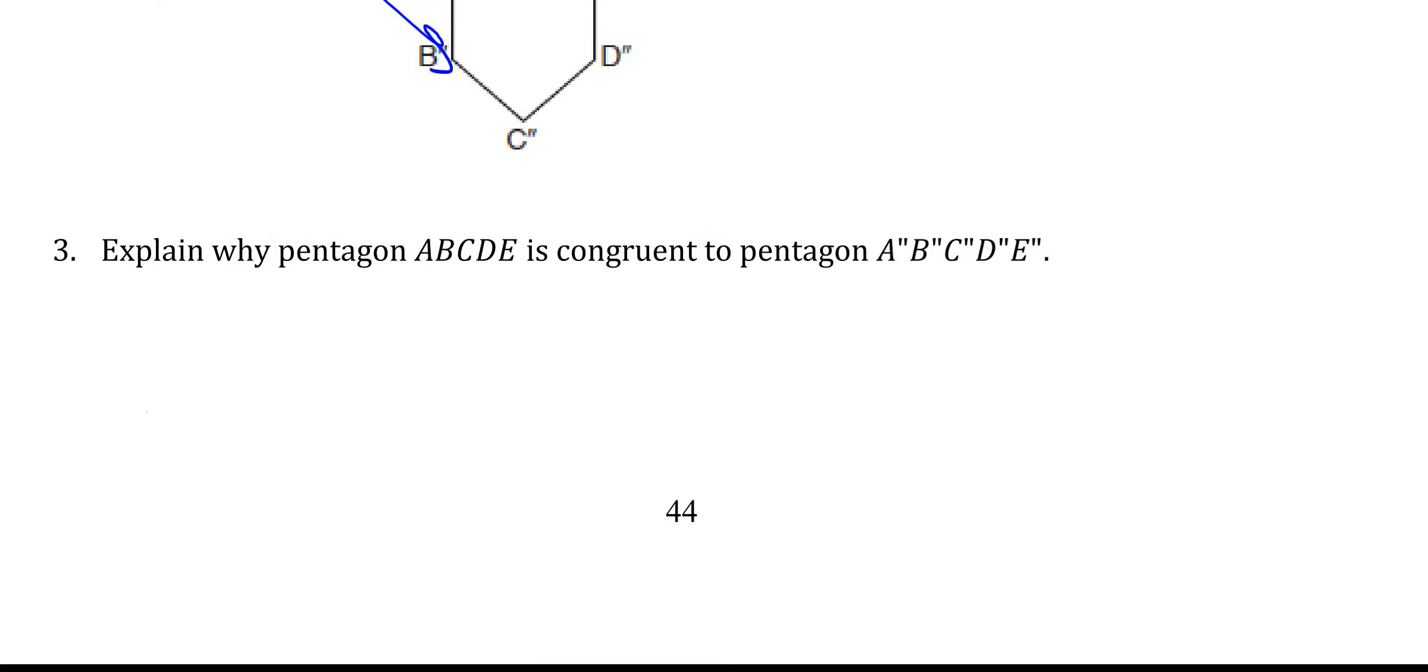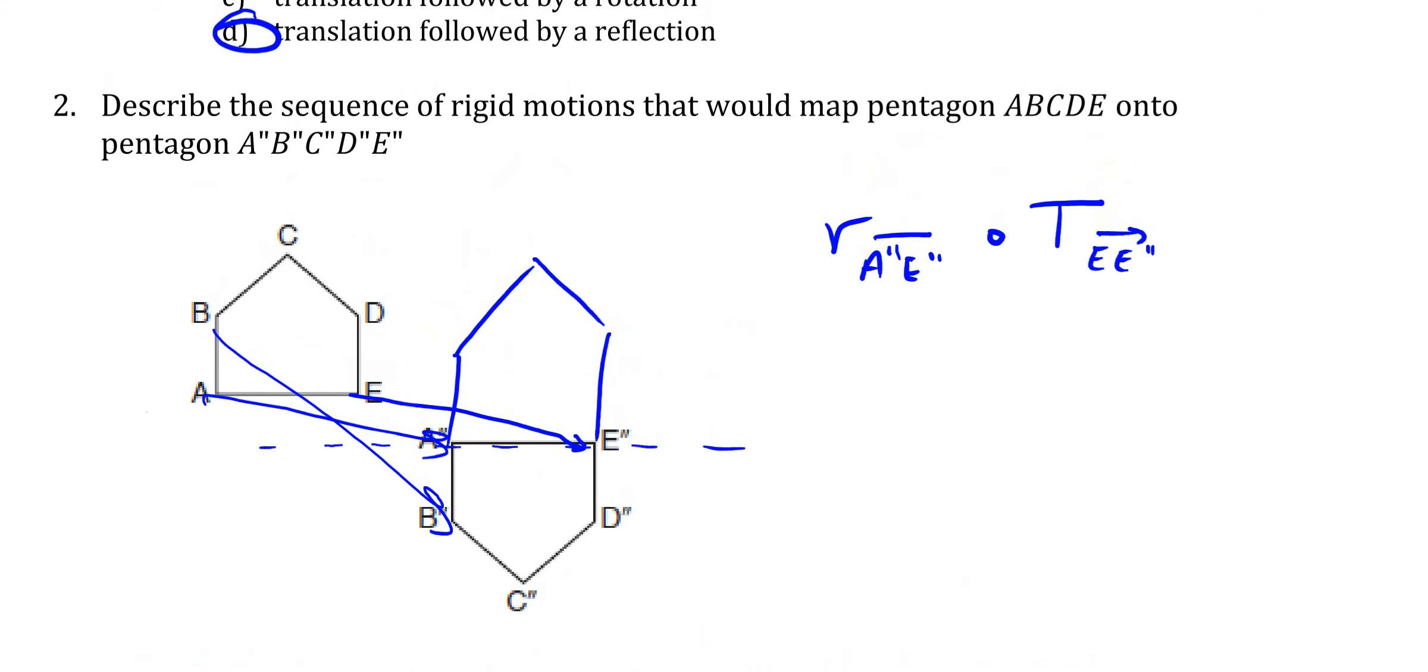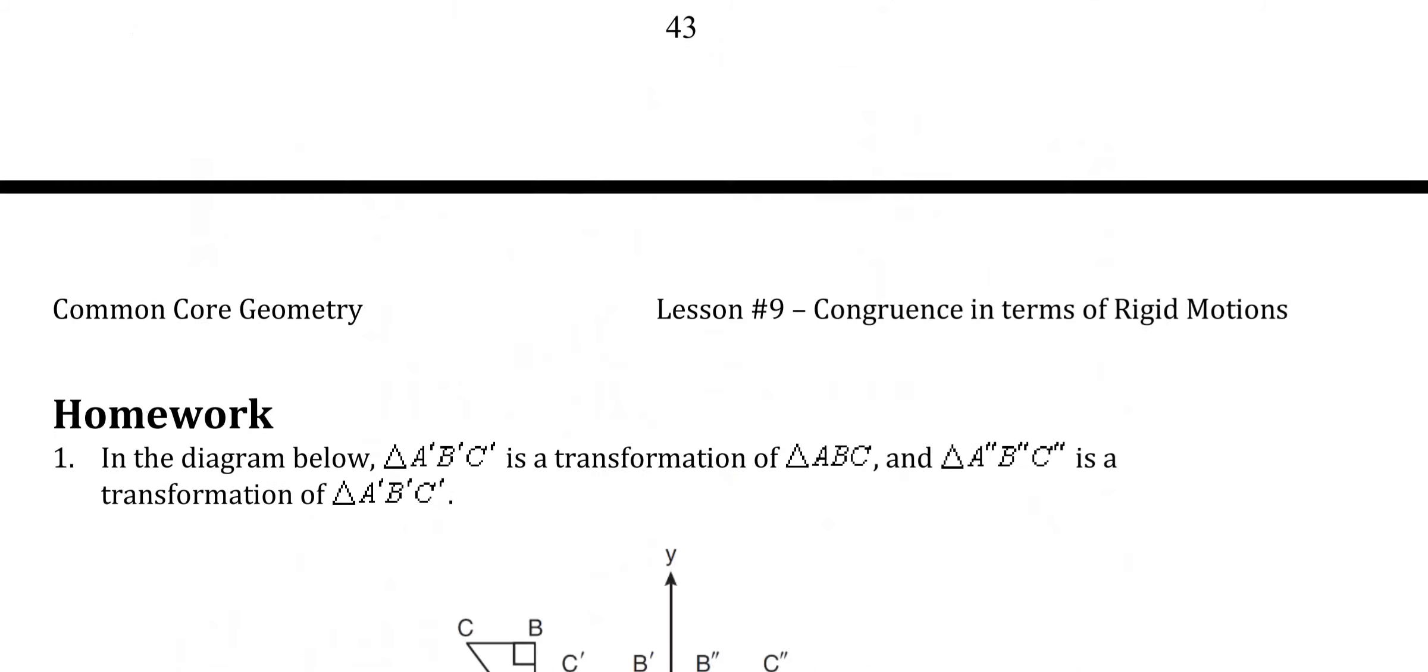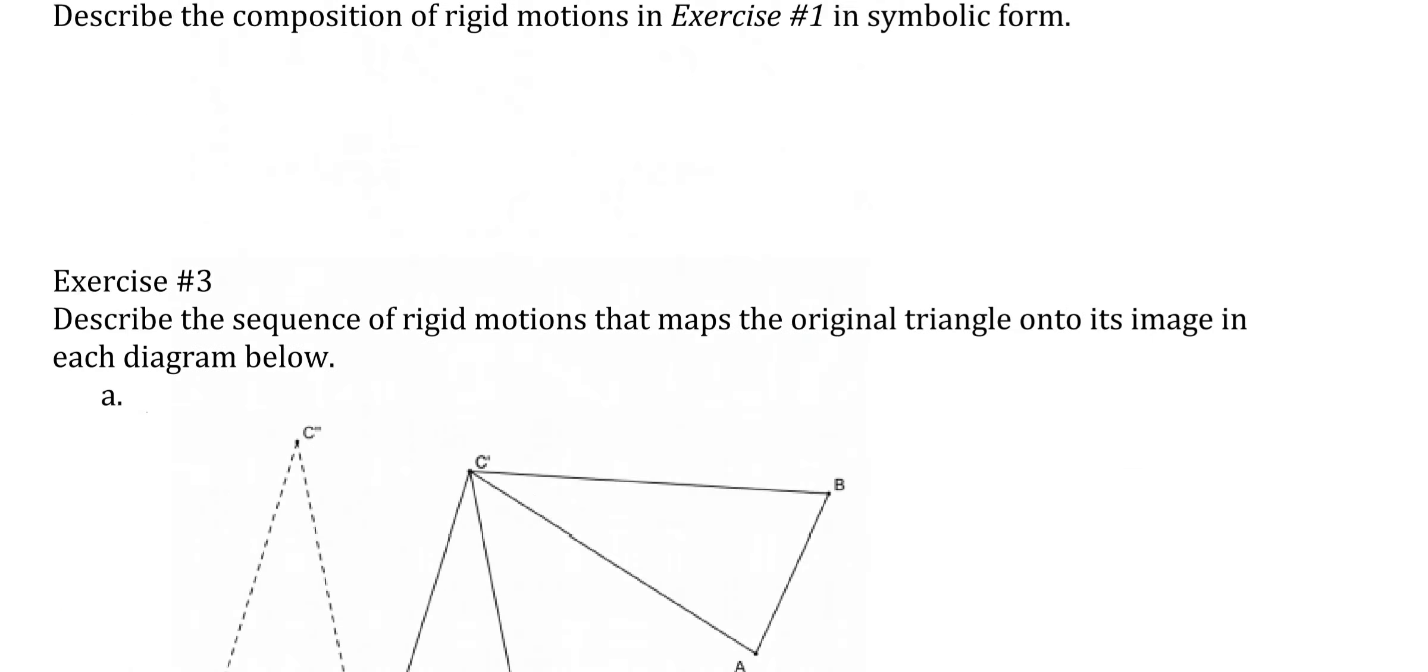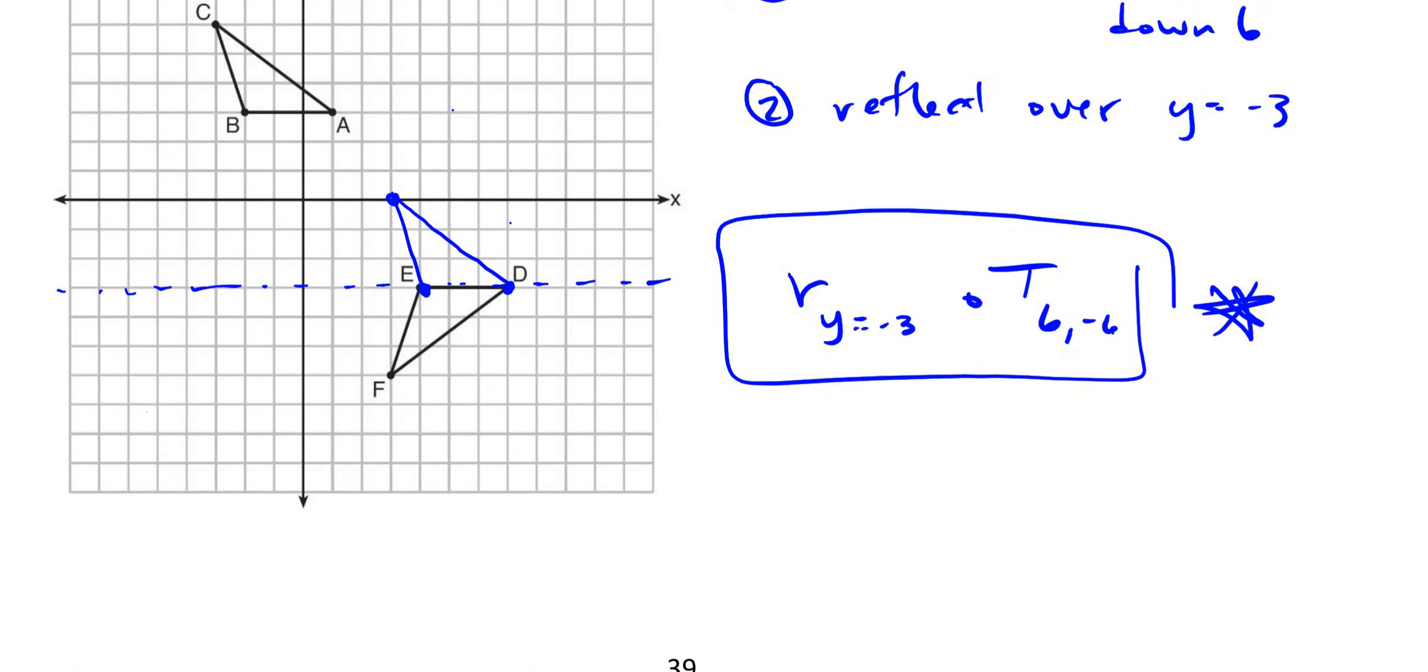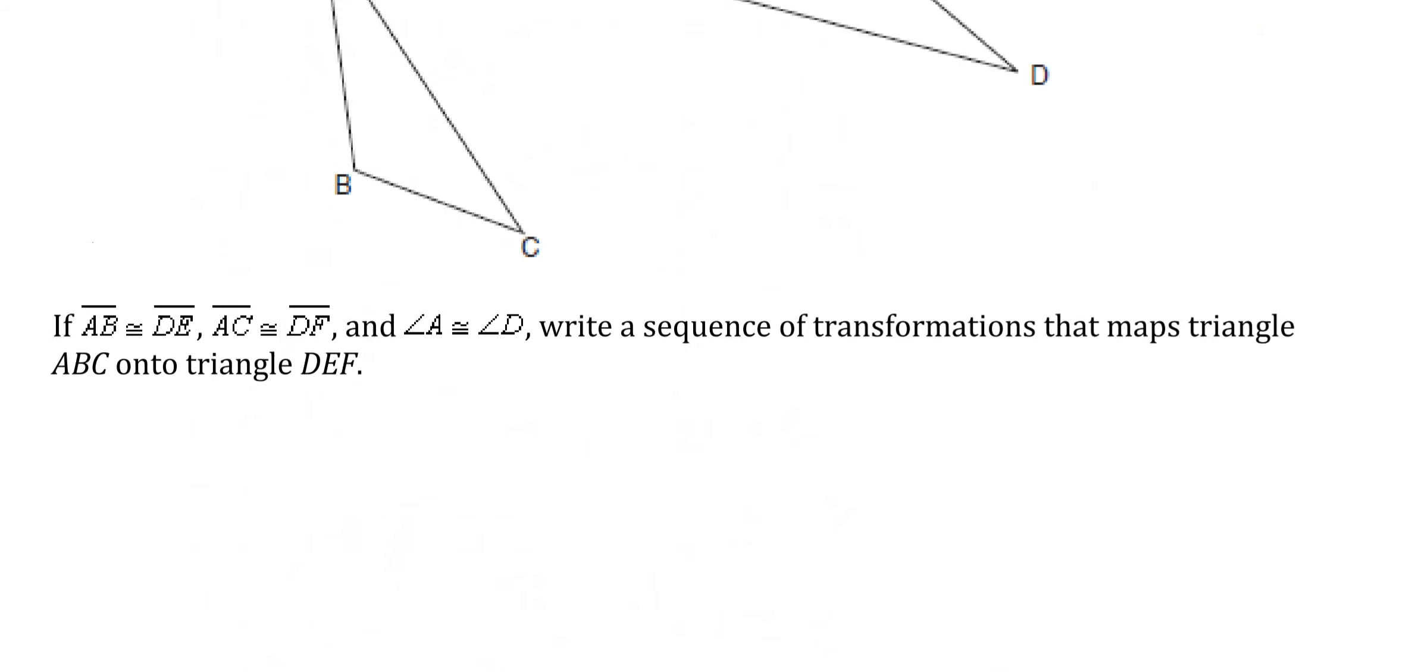Explain why the pentagons are congruent. Translations and reflections are rigid motions, which preserve size and shape. Those of you that are watching this video, number 2 for sure is on your test. Also, just to give you the heads up here, I'd also definitely know how to do number 5 from lesson 8. Because those are really two good questions I could ask on a test.